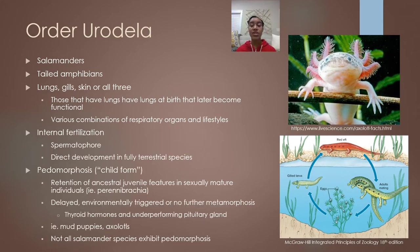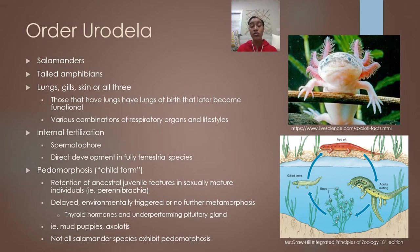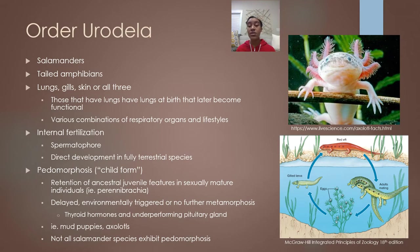Salamanders undergo internal fertilization and use a spermatophore to reproduce — these are packets of sperm that the male deposits onto a twig or leaf, and the female then picks up the sperm into her reproductive tract. The vast majority of salamanders undergo metamorphosis. However, some terrestrial species undergo direct development, where once they hatch from their eggs, they are just really small versions of the adult.